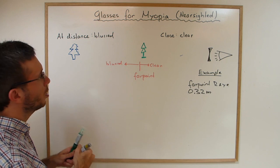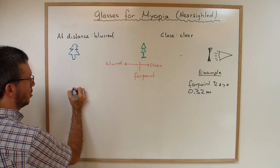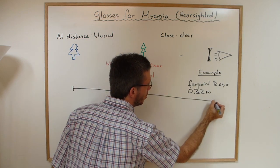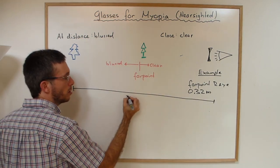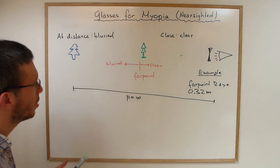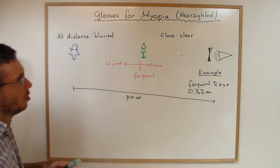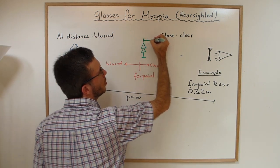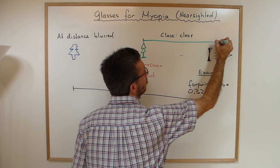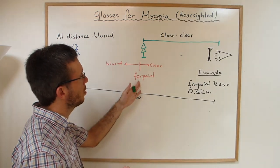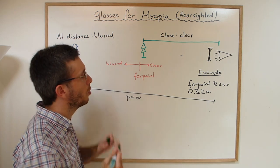So what do I need? I have an object that is very far away. So object distance, you can assume infinity. I want to see sharp at distance. What is my image distance? My image distance is the distance of the image to the eye, and if I want to be able to see clearly, that needs to be closer than my far point.